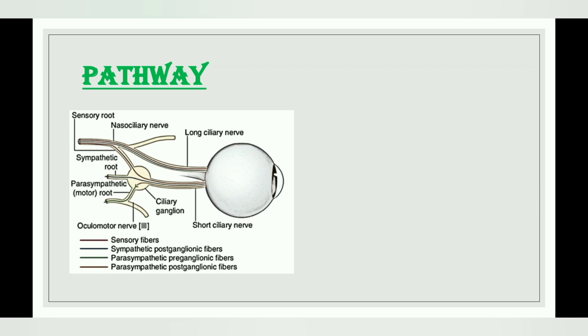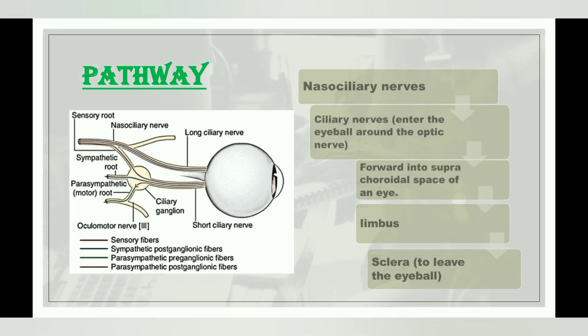The pathway starts from the nasociliary nerves, moving towards the optic nerve with long ciliary nerves. The nasociliary nerves with ciliary nerves enter the eyeball around the optic nerve — as you can see in the diagram. Then they move forward into the suprachoroidal space of the eye. From there, they move towards the limbus, and after reaching the limbus, they leave the sclera to supply the cornea.